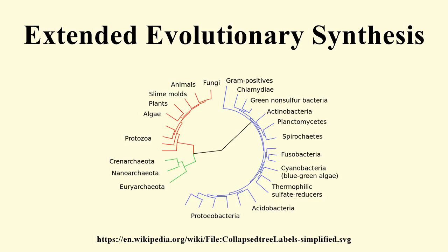In 1978, Michael J. D. White wrote about an extension of the modern synthesis based on new research from speciation. In the 1980s, Stephen Jay Gould argued for an extended synthesis, based on his idea of punctuated equilibrium, the role of species selection shaping large-scale evolutionary patterns, and natural selection working on multiple levels extending from genes to species.